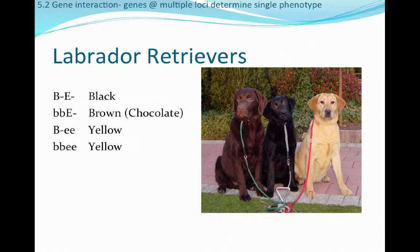Chocolate, or brown, labs are homozygous recessive at the first locus (little b, little b), and have big E at the second locus — it doesn't matter what the second allele is at that E locus. Yellow labs are common because two different genotypes can produce a yellow individual: one with big B at the first locus but homozygous recessive (little e, little e) at the second, and one that is homozygous recessive at both loci. In either case, the homozygous recessive little e, little e genotype at the second locus results in a yellow phenotype no matter what.